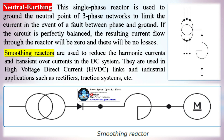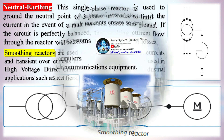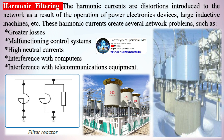Neutral earthing: the single-phase reactor is used to ground the neutral point of three-phase networks to limit the current in the event of a fault between phase and ground. If the circuit is perfectly balanced, the resulting current flow through the reactor will be zero and there will be no losses.